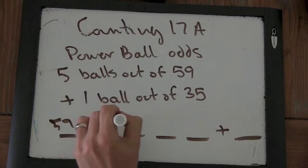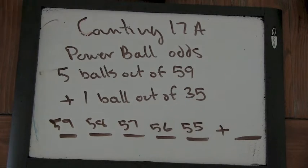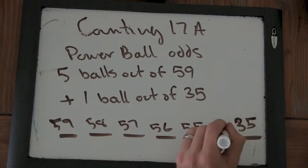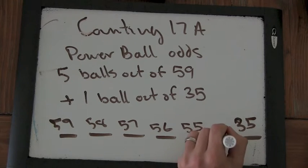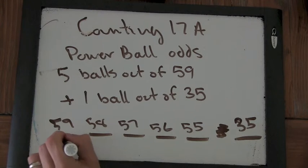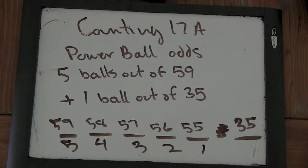So you've got 59 times 58 times 57 times 56 times 55. And then you have 35 choices for the Powerball. I better be careful about putting a plus there. And then you have to divide this by 5 times 4 times 3 times 2 times 1 because that's the overlap.